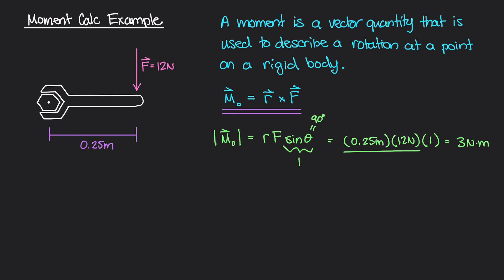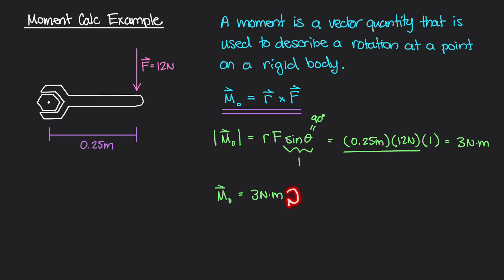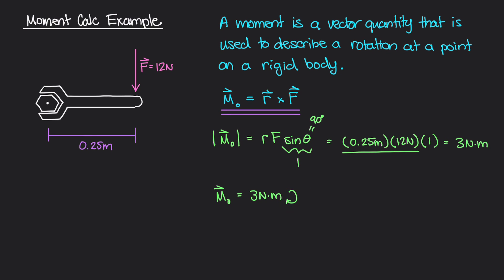The units for a moment are force times distance — newtons times meters. So we have the magnitude: 3 newton meters. Now we need the direction. Intuitively, if I'm pushing down on the end of the wrench, it's going to turn clockwise. So the moment about the bolt is also in that direction — 3 newton meters clockwise.